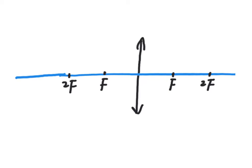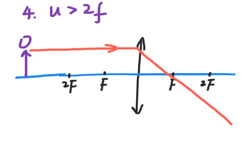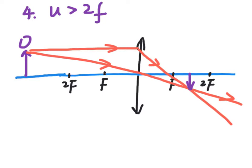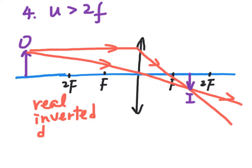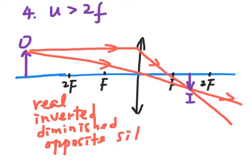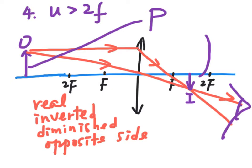In case 4, the object is put beyond 2f — that is, u is greater than 2f. By using special light rays, we find that the image is between f and 2f on the other side. The image is real, inverted, but diminished, and on the opposite side from the object. If the object is the letter P, the image seen through the lens would be a smaller letter D.